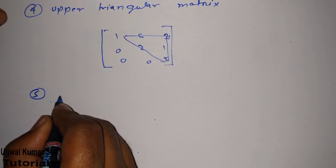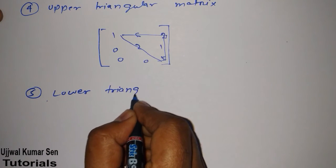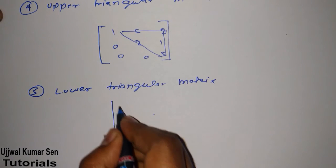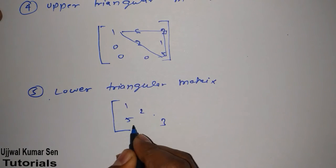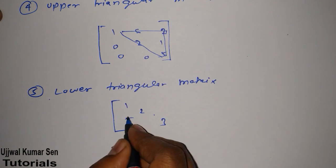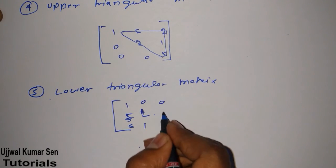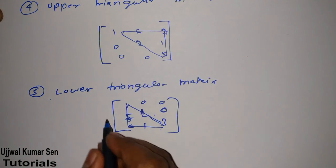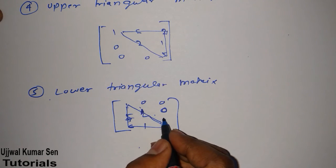If we'll talk about lower triangular matrix, then it's like this. Suppose that 1 2 3 5 and 5 6 1 0 0 0. Its lower triangle having all values and other than diagonal values, its upper one having 0 values. This is known as lower triangular matrix.